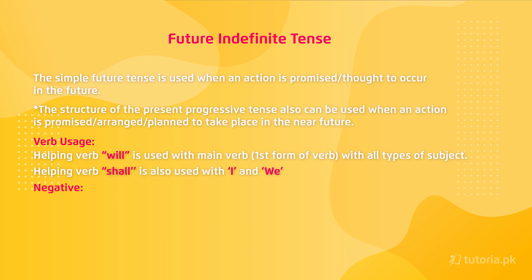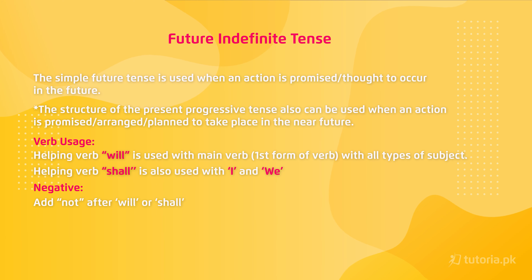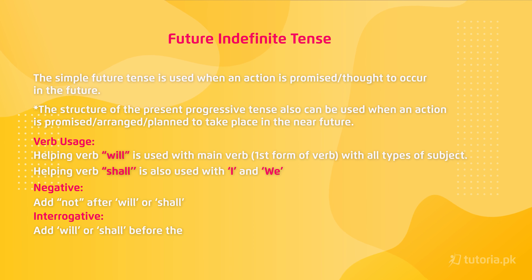For interrogative sentences, place 'will' or 'shall' before the subject, e.g., 'Will I go to school?' That is how you form a question. For Urdu translation, sentences ending in 'ga', 'gi', or 'gay' should be translated using future indefinite tense.